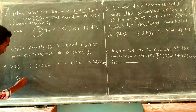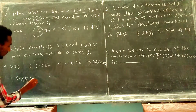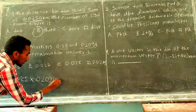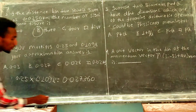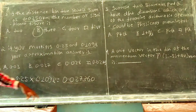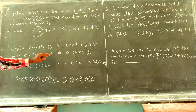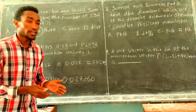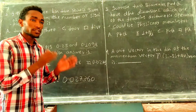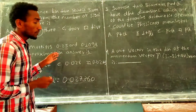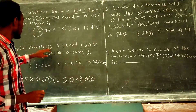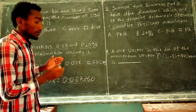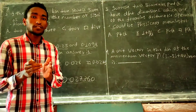0.25 times 0.1098 — the answer is 0.02745. So if you look at multiplication, you'll see the significant figures for the multiplication result.